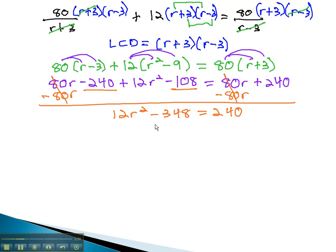Because we have r squared but no r, we can simply isolate the r squared and use the even root property in order to solve. We will add 348 to both sides to get 12r squared equals 588.